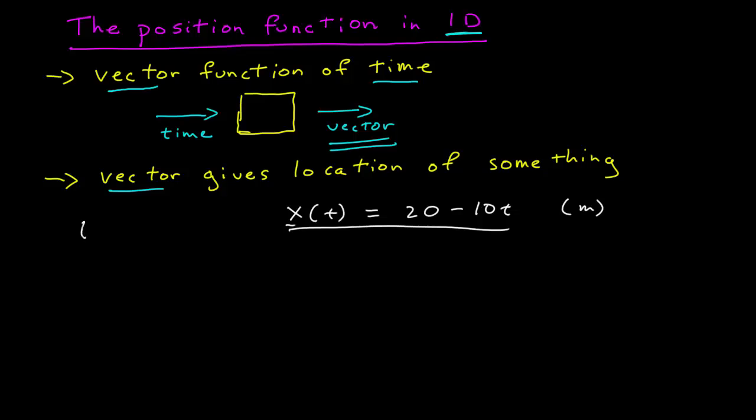Let's look at a tabular representation. We can get ourselves a table that for specific values of time, say 0, 1, 2, 3, we can find specific positions. At t equals 0, if I put 0 into this function I get 20. If I put 1 into this function I get 10. If I put 2 into this function I get 0, and then 3 I get negative 10.